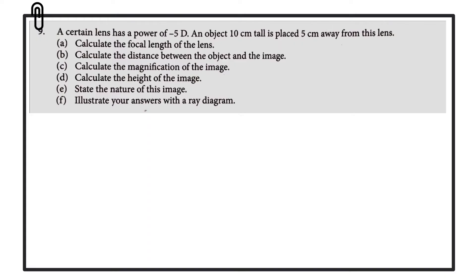Hi folks. In this video we're going to have a look at a question involving lenses. A certain lens has a power of minus 5 diopters. An object that's 10 centimeters tall is placed 5 centimeters away from this lens. We're being asked to calculate a number of things in regards to this setup.